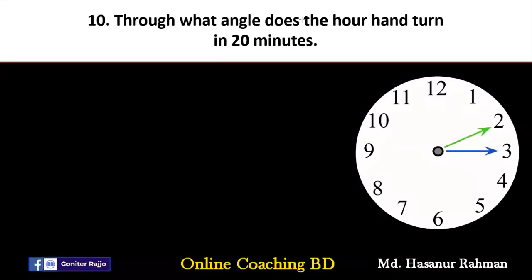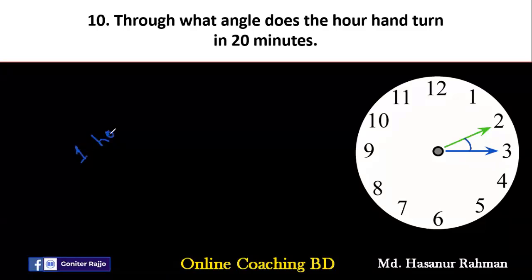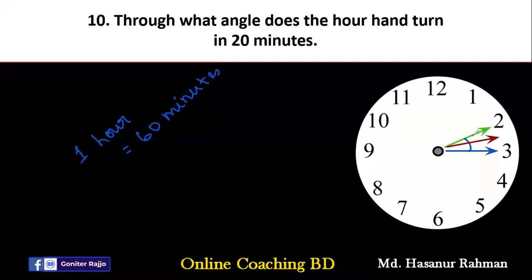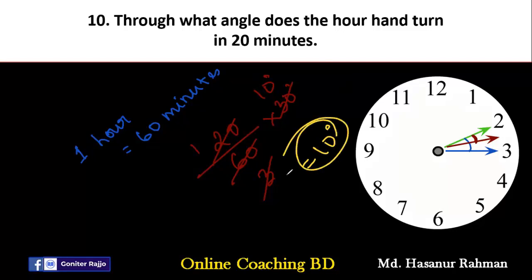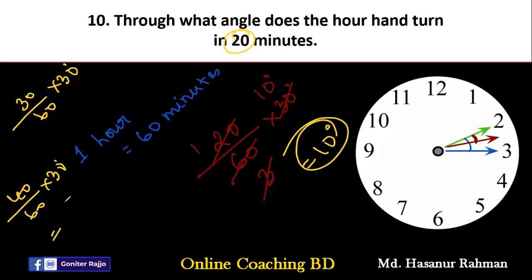Number ten says: through what angle does the hour hand turn in 20 minutes? One hour equals 60 minutes and the hour hand creates 30 degrees per hour. So in 20 minutes it turns 20/60 multiplied by 30 degrees, which is one-third of 30, giving 10 degrees. In general, for any number of minutes, the formula is: minutes/60 multiplied by 30 degrees. For example, 30 minutes gives 30/60 × 30 = 15 degrees; 40 minutes gives 40/60 × 30 degrees; 50 minutes gives 50/60 × 30 degrees.